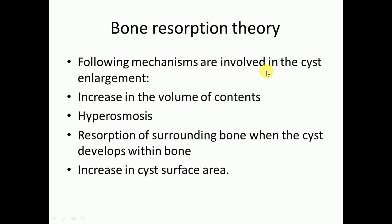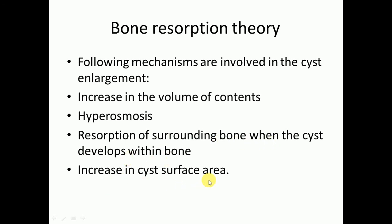The following mechanisms are involved in cyst enlargement. In summary, the bone resorption theory involves: increase in the volume of the contents, hyperosmosis, resorption of the surrounding bone when the cyst develops within bone, and increase in cyst surface area.